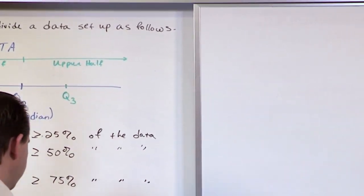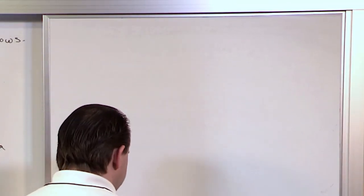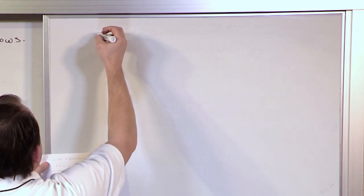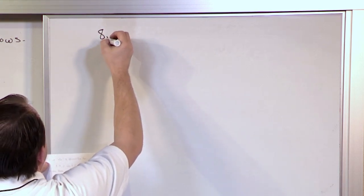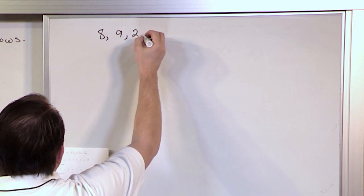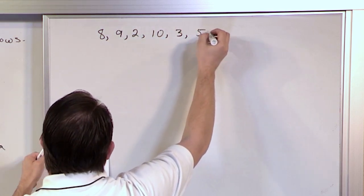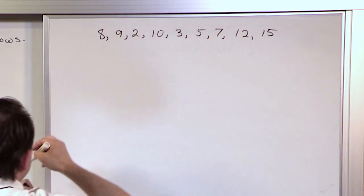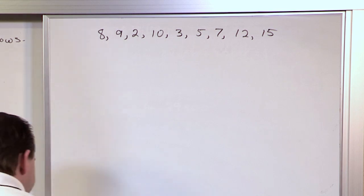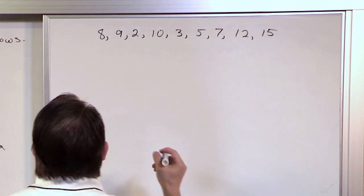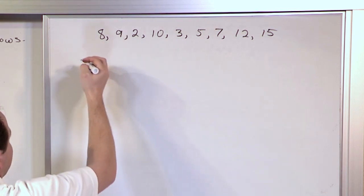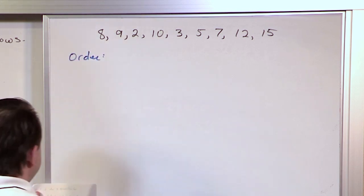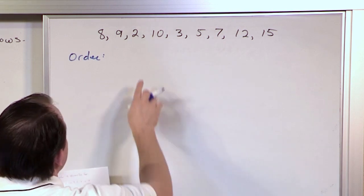So it's not a terribly hard concept, so let's go ahead and do some examples. Let's find the quartiles for the following data: 8, 9, 2, 10, 3, 5, 7, 12, and 15. Remember, in order to find quartiles, which is basically finding medians, we want to order the data. So we want to go ahead and put them in order.